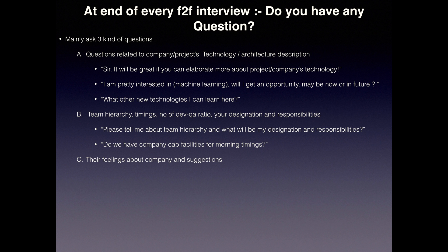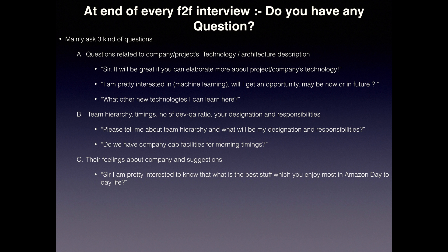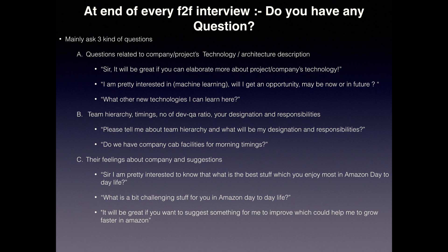The third type of question is related to the interviewer's feelings about the company and their suggestions. For example, you can ask: 'Sir, I am quite interested to know what is the best thing you enjoy most in Amazon's day-to-day life?' This lets you learn what the interviewer thinks about the company and its work culture, and it also signals that you are genuinely interested in joining. You can also ask: 'What is the biggest challenge for you in Amazon's day-to-day life?'